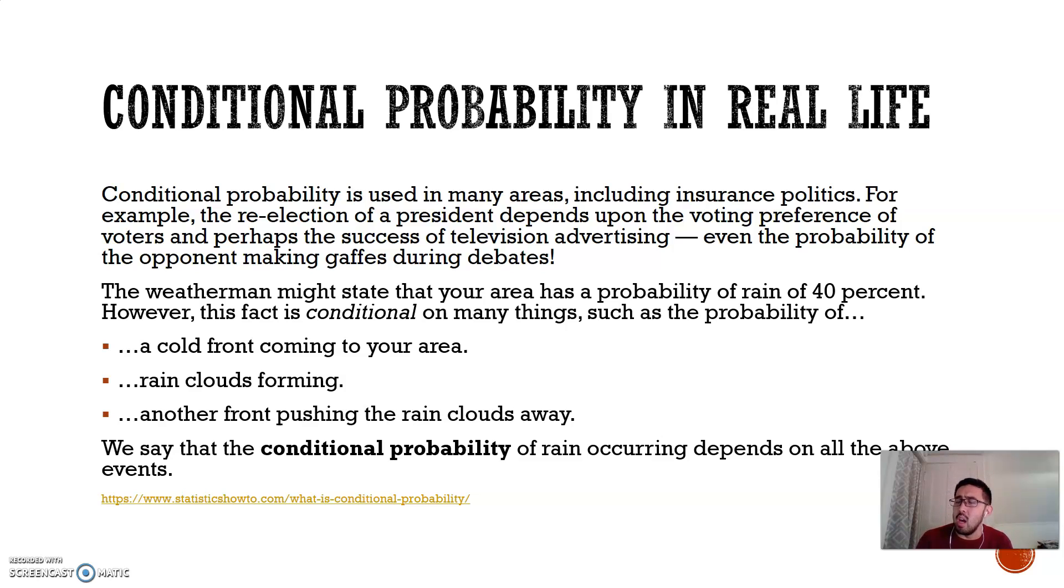But essentially, the weatherman. When he starts talking about, oh yeah, there's a 40% chance of rain, there's a bunch of conditions attached to that. There's a condition of a cold front blowing through, possibly rain clouds forming, or another front pushing rain clouds away. This is all conditional probability. It's based on those things.